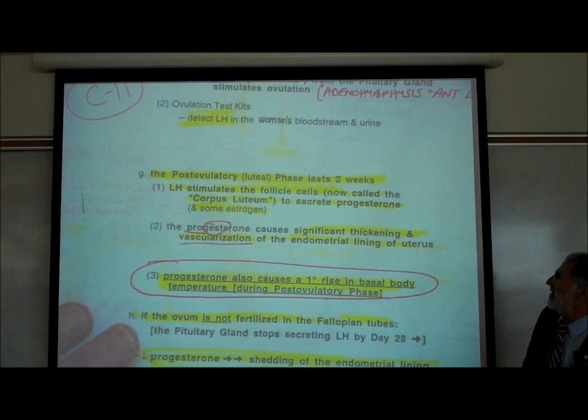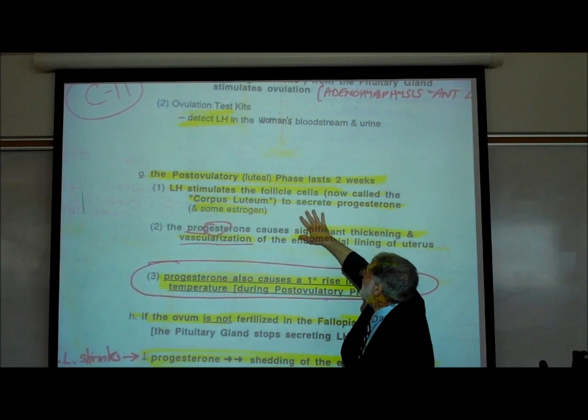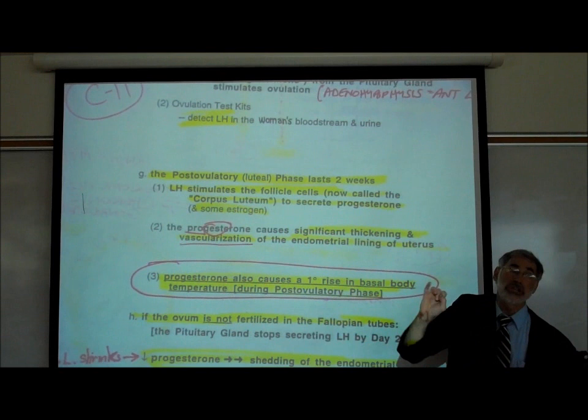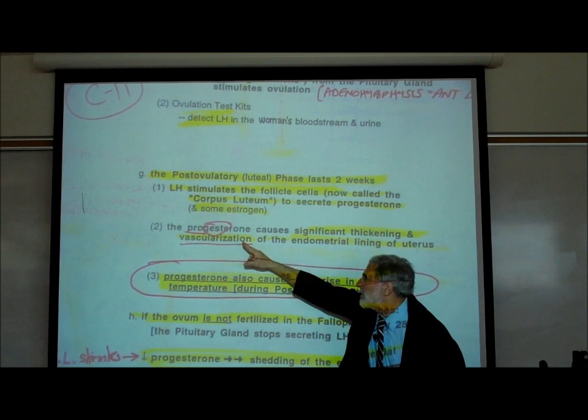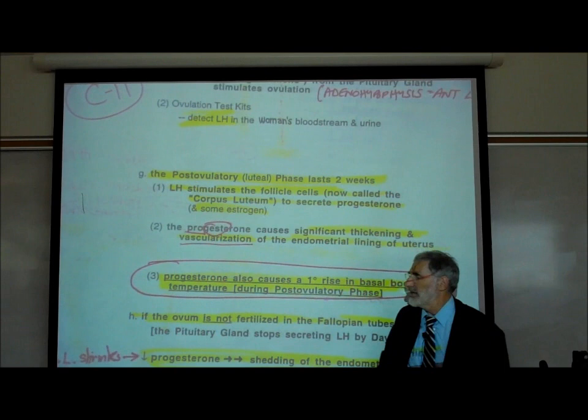In the post-ovulatory phase, after the egg pops out, LH caused the egg to pop out and continues to be secreted for a couple of weeks. It stimulates the follicle cells — now called the corpus luteum — to secrete progesterone and some estrogen. Progesterone — 'pro-gest' meaning to prepare for gestation — causes significant thickening of the endometrial lining and the growth of blood vessels — that's called vascularization.